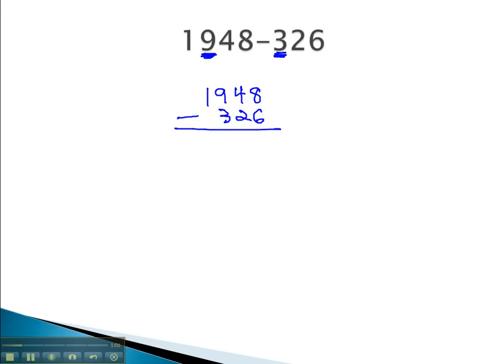We now can subtract each digit from right to left. Starting on the right, 8 minus 6 is 2. 4 minus 2 is also 2. 9 minus 3 is 6.